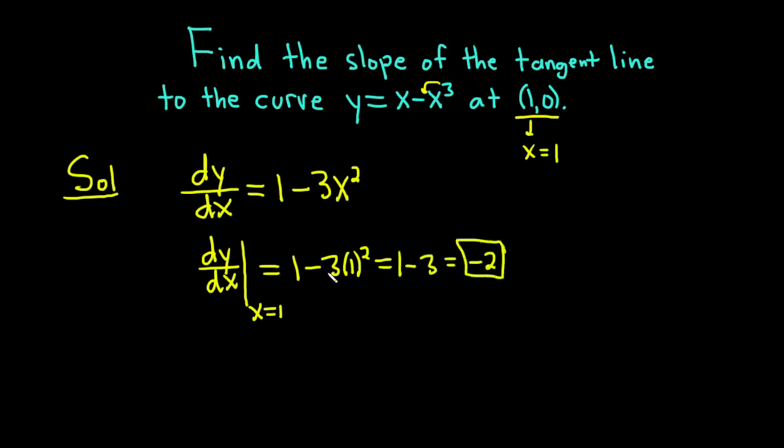So this is the derivative at x equals 1. So this is the slope of the tangent line to the curve at x equals 1. Remember that the derivative is the slope of the tangent line. Same thing.